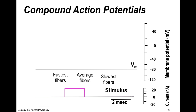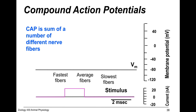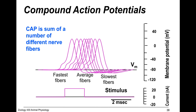In the lab this week you're going to look at compound action potentials. A visible nerve fiber is actually a bundle of a whole bunch of fibers. What you'll observe is a compound action potential — the sum of a number of different nerve fibers: fast fibers, average fibers, and slow fibers. They're all generating action potentials, and what you observe electrically is the sum of all of those. It has a slightly broader shape than an isolated single action potential because it's the sum of many potentials.